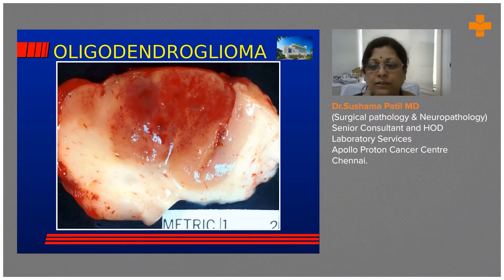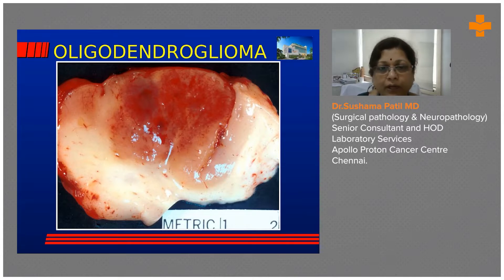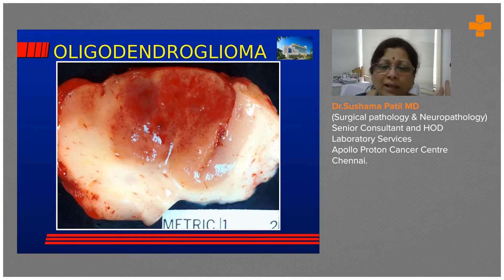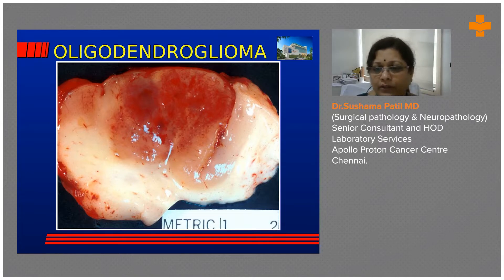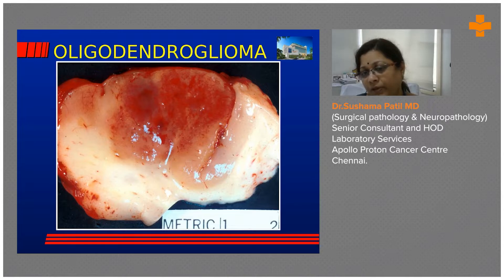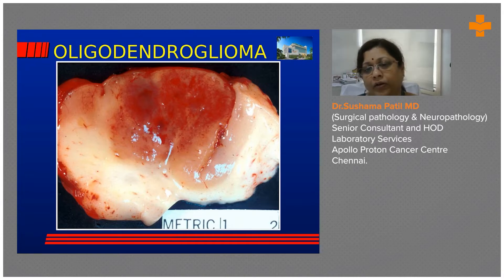Moving on to the oligodendroglioma — after pylocytic and the low-grade and high-grade gliomas. This is an oligodendroglioma; this is a gross tumor section. You can see how vascular and red the tumor is. It is so close to the cortex — on the right aspect of the image you can see the gray-white junction is still retained, but in the tumor area it is completely gone.